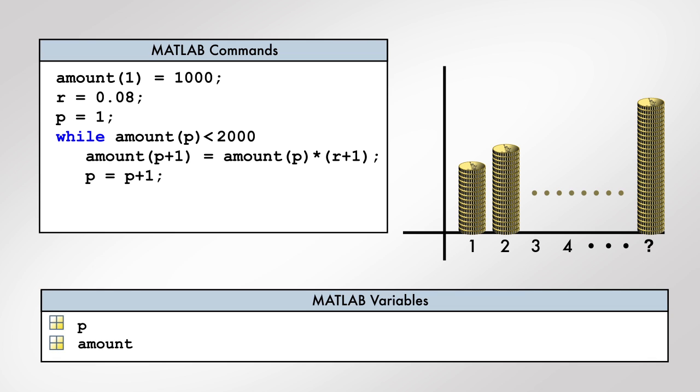The block of commands following the condition is called the body of the while loop. This block of commands is repeatedly executed as long as the condition is true. The while loop construct terminates with the keyword end.